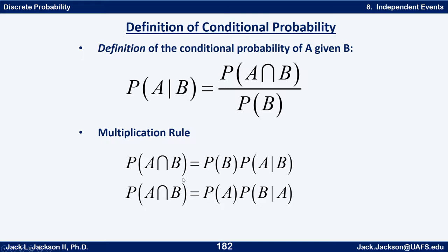Now remember the definition of conditional probability: P(A|B) is equal to the probability of the intersection of A and B divided by the probability of B. This leads us to a multiplication rule — multiplying both sides by P(B), we get P(A∩B) = P(B) · P(A|B). Similarly, P(A∩B) = P(A) · P(B|A).